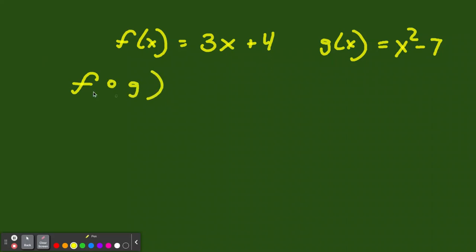So what if we had, let's say, f of x equals 3x plus 4. And g of x equals x squared minus 7. And you saw this. You saw f, the open circle, g of x. And this would mean, now we would have f of g of x. So what do you think? How do we do this?